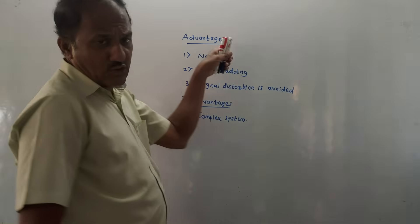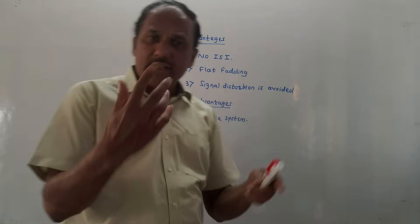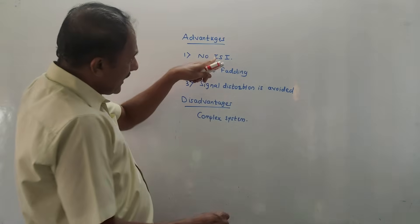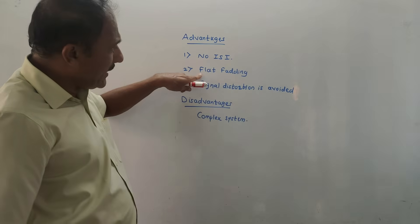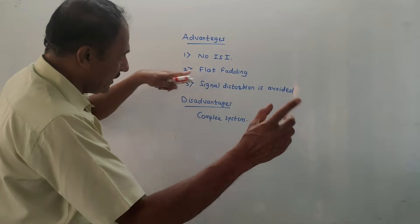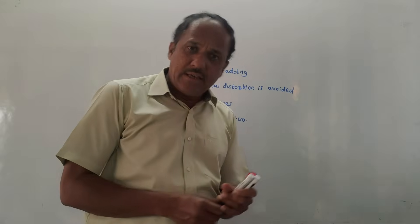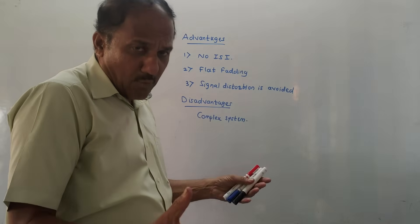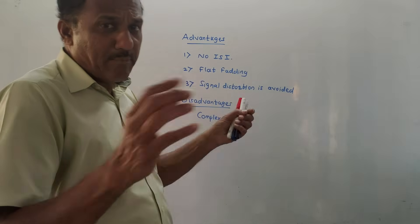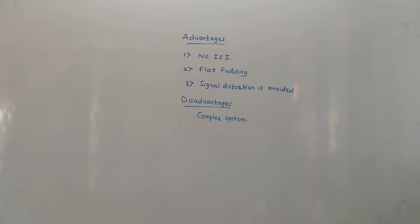The major advantages of the multi-carrier system: there is no inter-symbol interference ideally, unlike the single carrier system where only one carrier is used and ISI can occur. We also get flat fading because we use N sub-carriers instead of a single carrier, and signal distortion is avoided. The major disadvantage is that N complex modulators and demodulators are needed, making it practically difficult to implement.